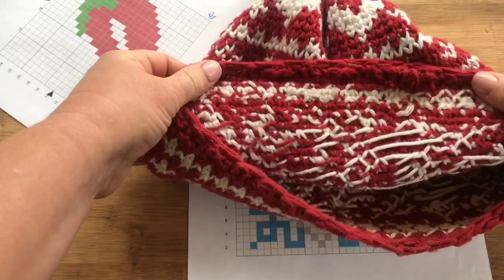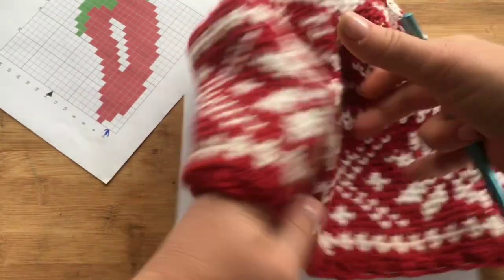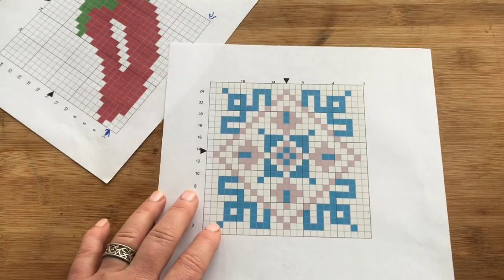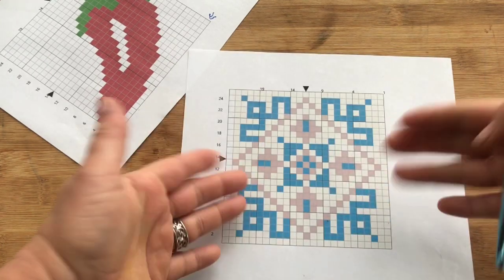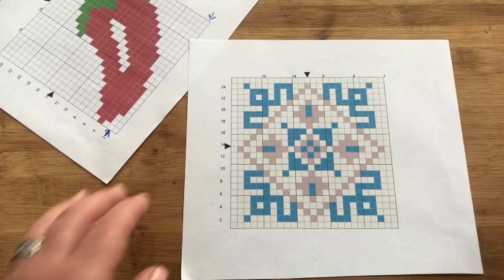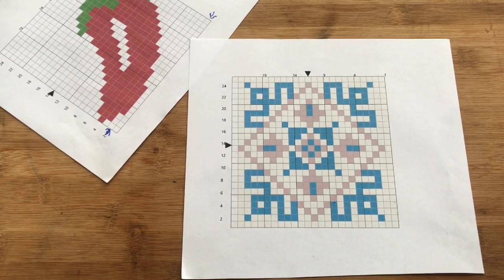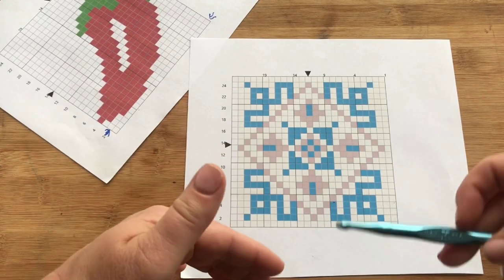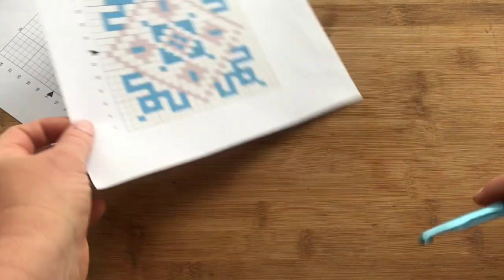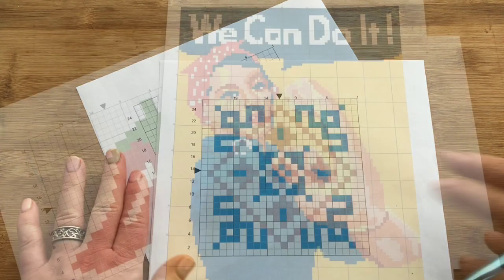If you're going to work it in the round, sometimes you can work a graph in the round and then you float the yarn behind, and you're never going to see that back side. But if you're doing a double-sided blanket, you're going to want to use that intarsia technique where you hide the yarn.